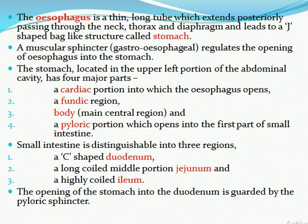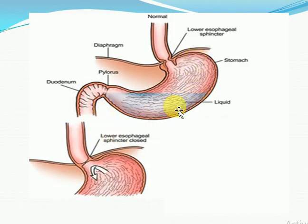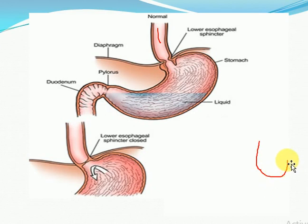Food goes from the pharynx into the esophagus. The esophagus is a thin, long tube that passes through the neck, thorax, and diaphragm and enters the stomach. The stomach is a J-shaped bag-like structure — as you can see in the diagram, this J-shaped bag-like structure. This is the esophagus opening into the stomach.